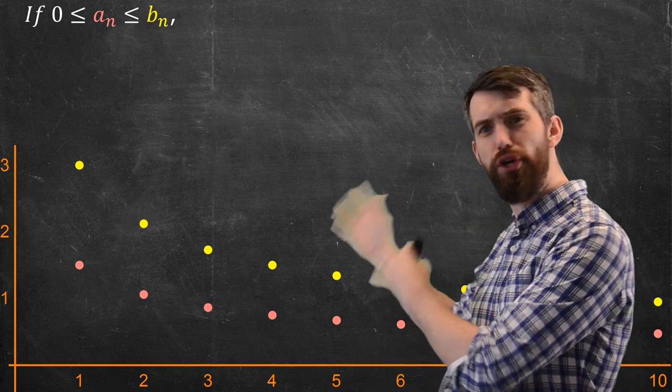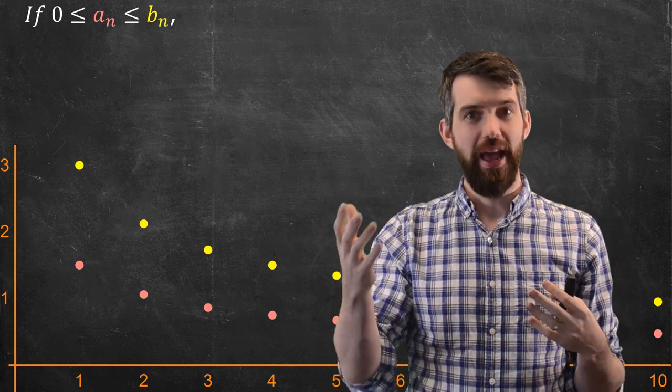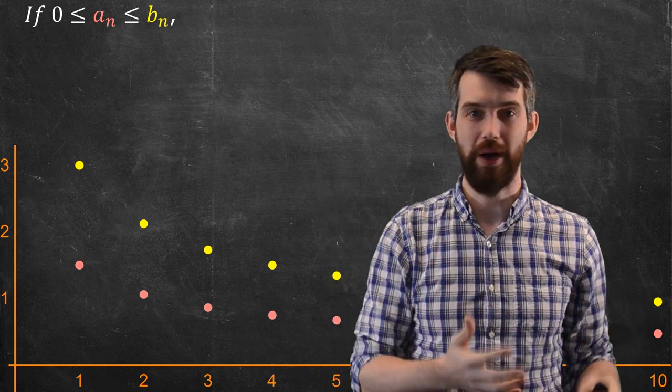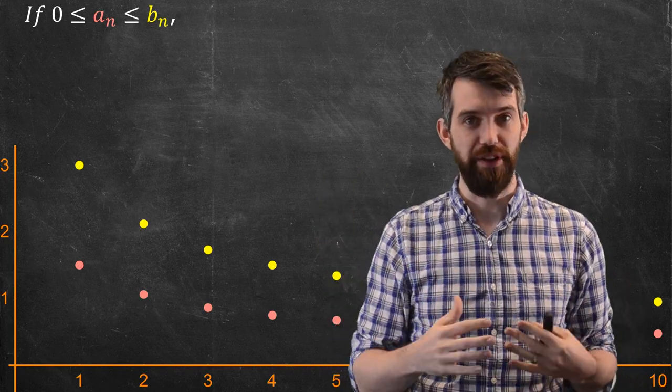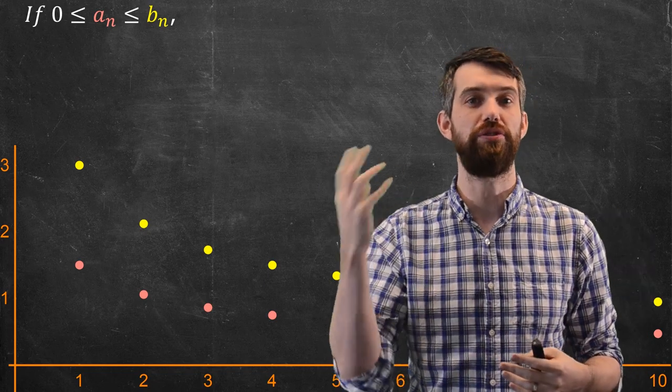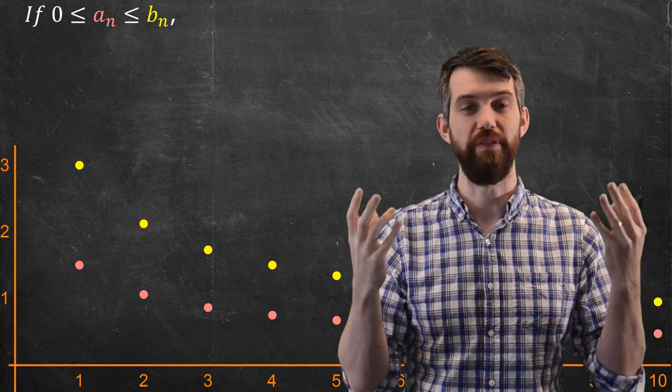Suppose I have the graph of two different series, AN and BN, where BN is always bigger than AN and both are positive. What we're going to study in this video is a comparison test, where you compare the convergence or divergence of AN to the convergence or divergence of BN.